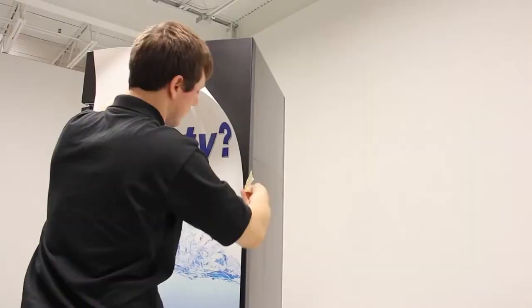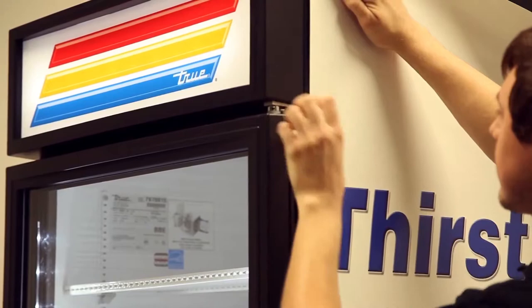First, we will line up the decal with the top edges and use the masking tape to hold the decal in place. Adjust the tape to align the edges at the top, bottom, and sides.